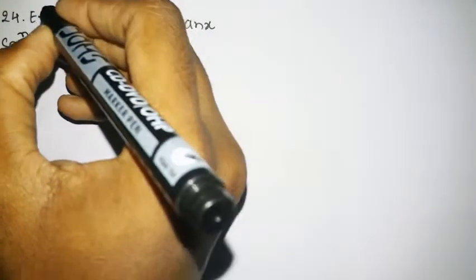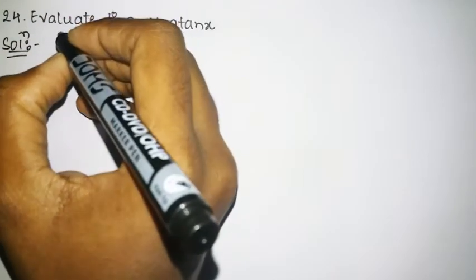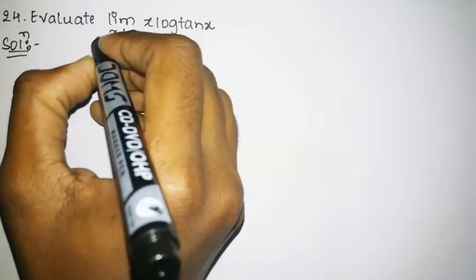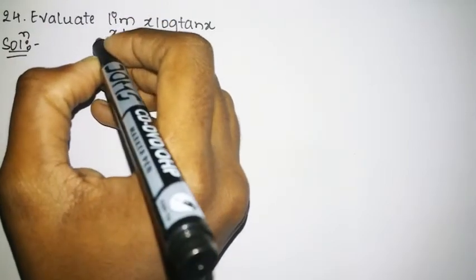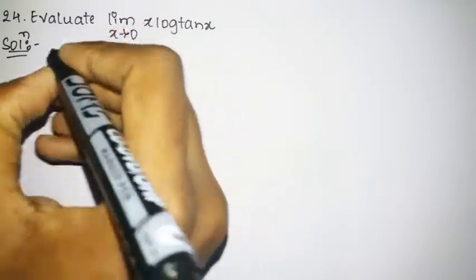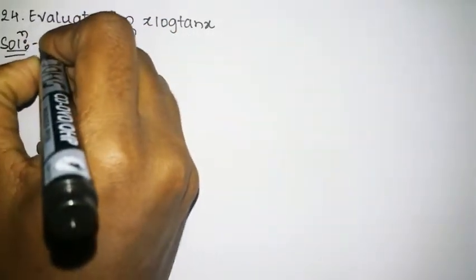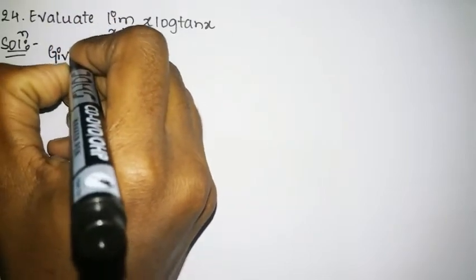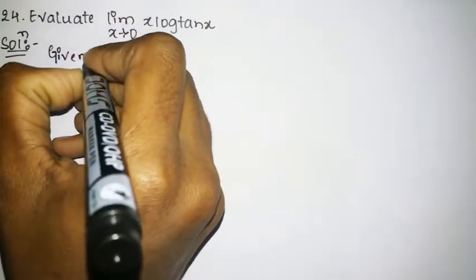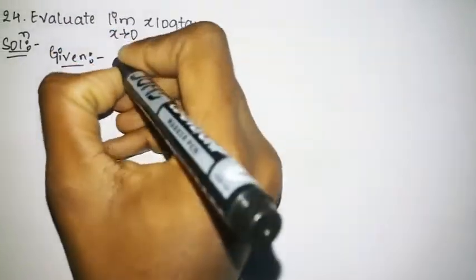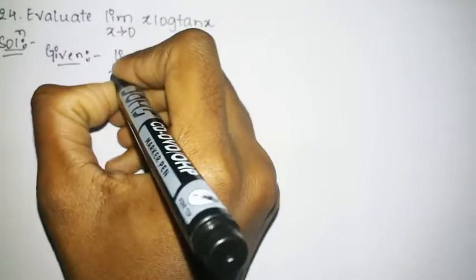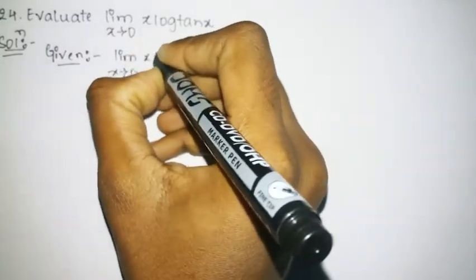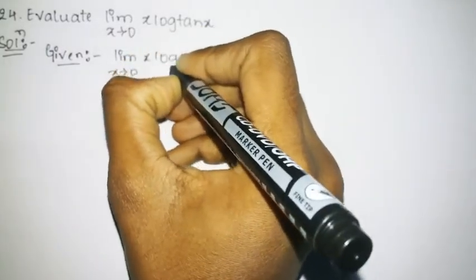The example is: evaluate the limit as x tends to 0 of x into log of tan x. So first we shall write the given, which is limit as x tends to 0 of x into log of tan x.